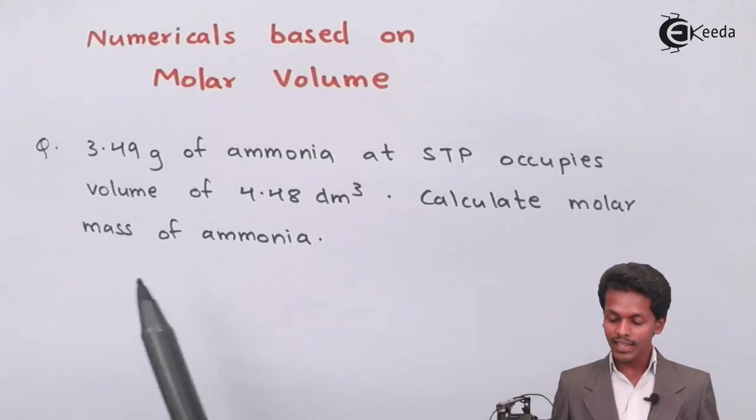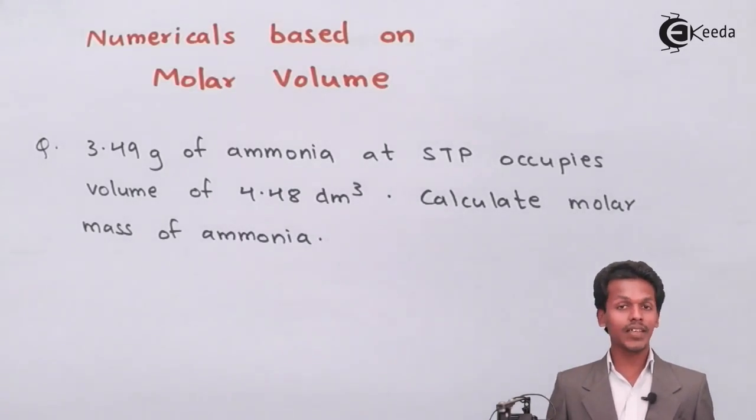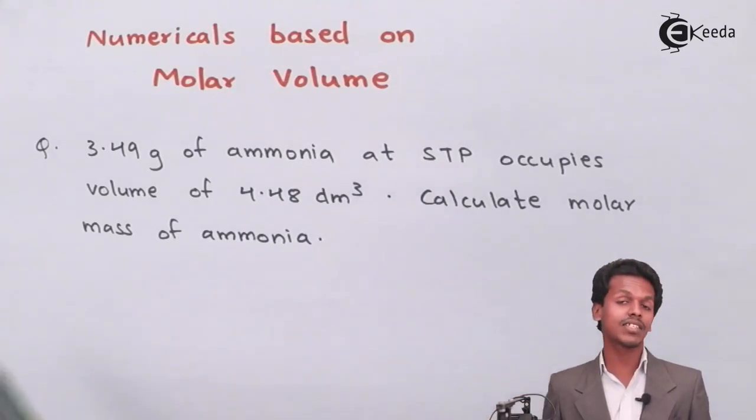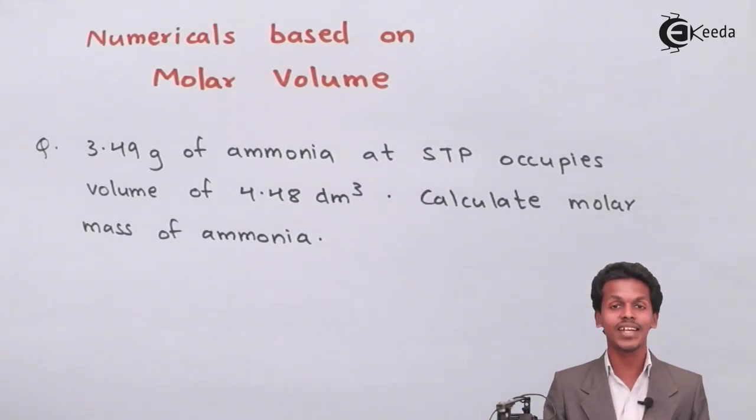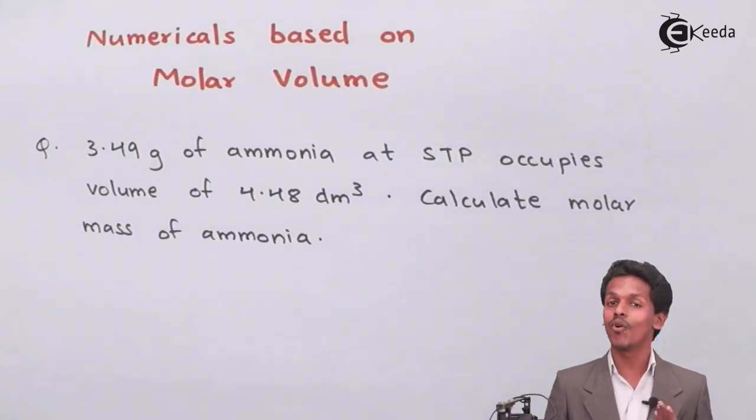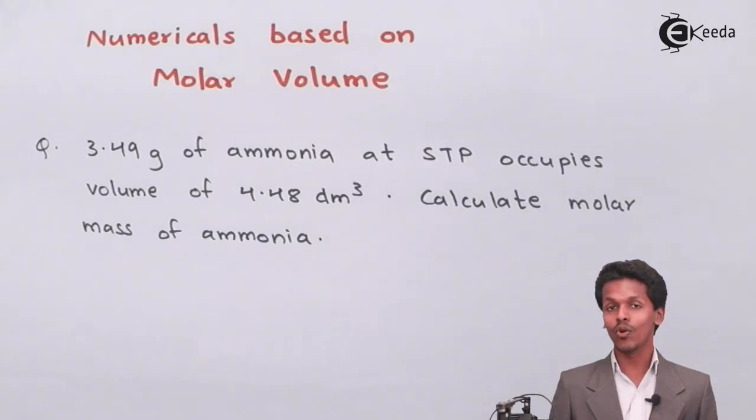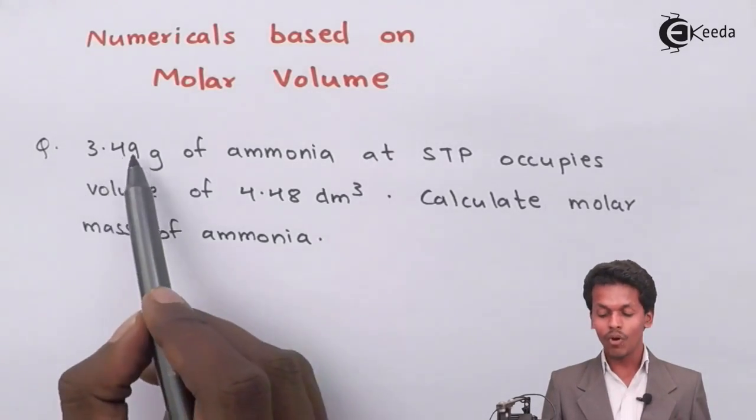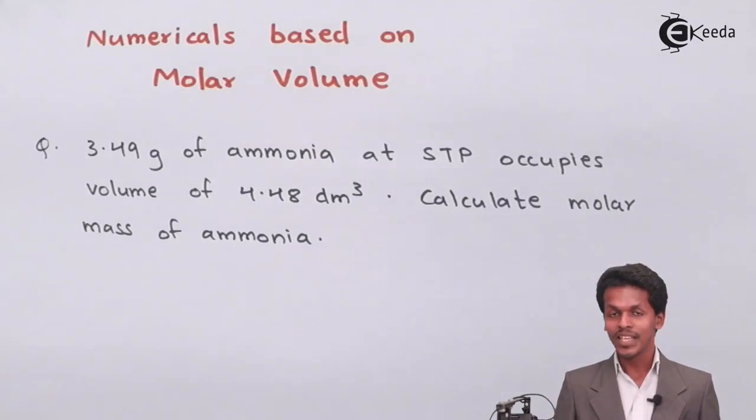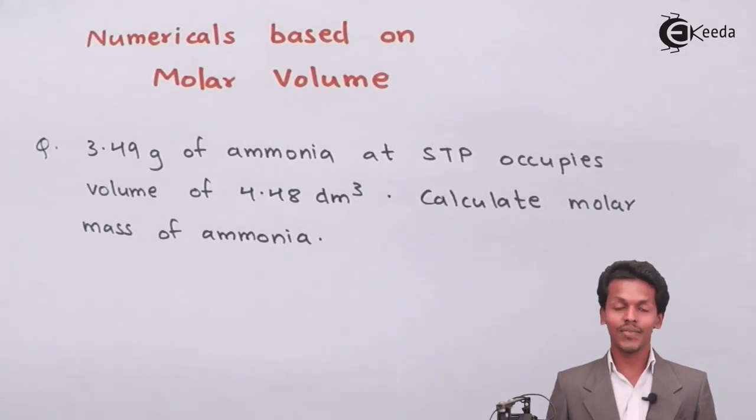4.48 dm³ has been given, and since it has been given at STP, it will clearly mention that we are talking about molar volume. We could relate it by molar volume, and this gram of ammonia has also been mentioned to us. Let us see what will be the answer and how we can calculate it.